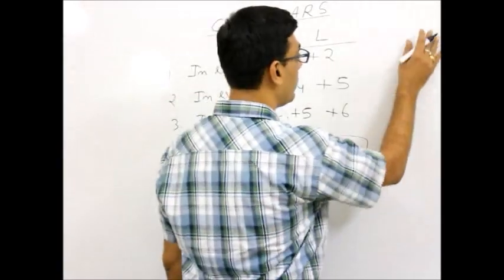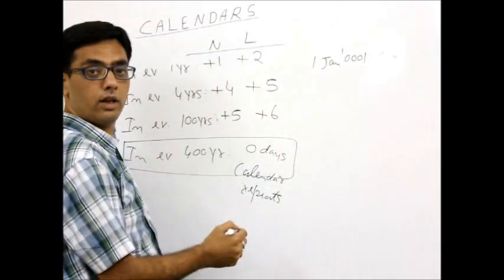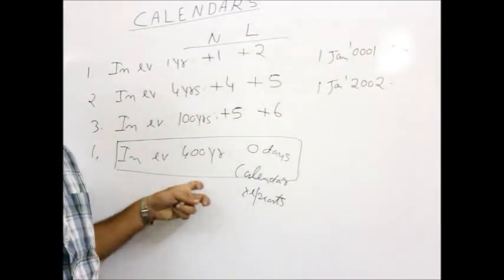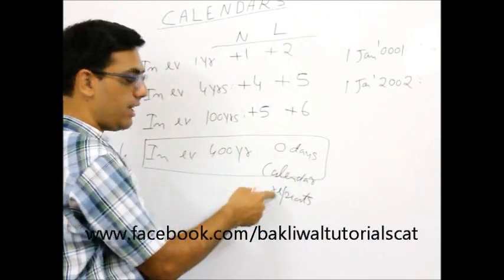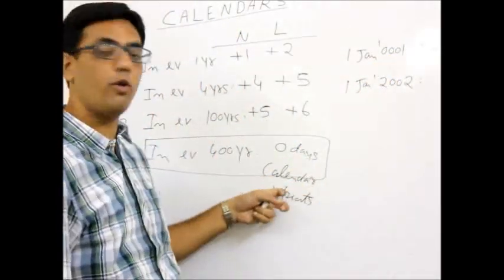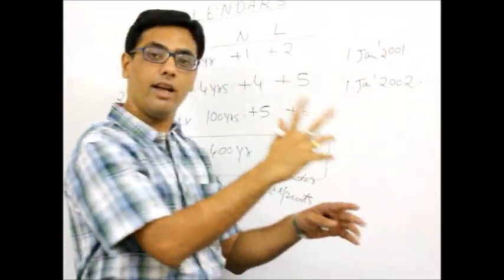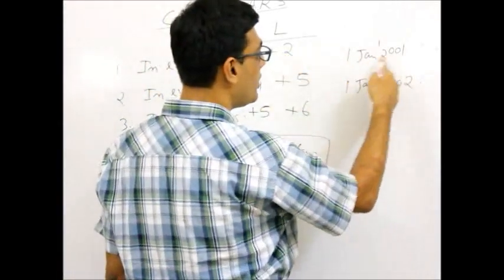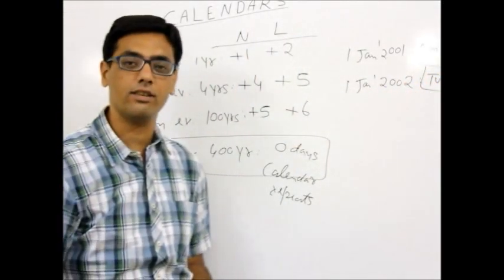There was a CAT 2002 question: if 1st of January 0001 is Monday, what is 1st of January 2002? Using the 400-year rule: from year 1 to 2001 is exactly 2000 years, and since 2000 is a multiple of 400 the date remains the same. So 1st of January 2001 is also Monday. Now it's just one more year — 2001 is a normal year, so plus 1, and the answer is Tuesday.